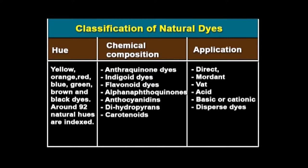As per chemical composition, they are classified as anthraquinone dyes, indigoid dyes, flavonoid or flavone dyes, alpha-naphthoquinone dyes, anthocyanidins, dihydropyrans, and carotenoids. Based on application, natural dyes are classified as direct, mordant, vat, acid, basic or cationic, and dispersed dyes.